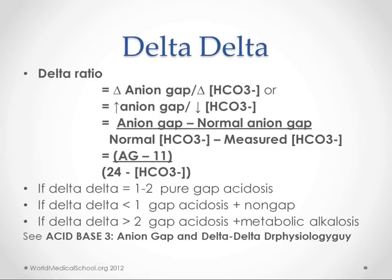If you have a delta ratio less than 1, that means you have a gap acidosis but also a non-gap acidosis. If your delta-delta is greater than 2, then you have a gap acidosis plus a metabolic alkalosis. If this doesn't make a lot of sense, there's a linked video that goes into more depth and will be helpful for you.